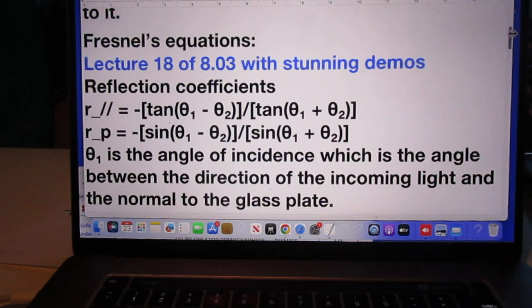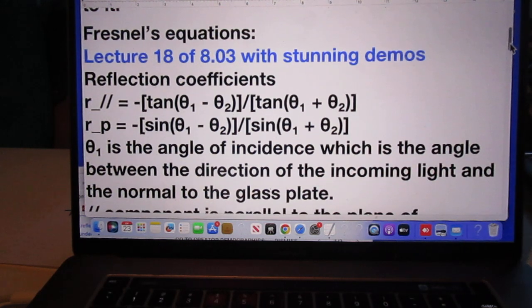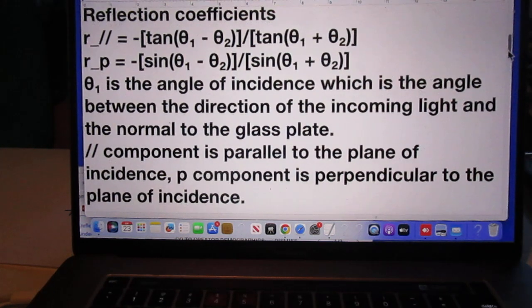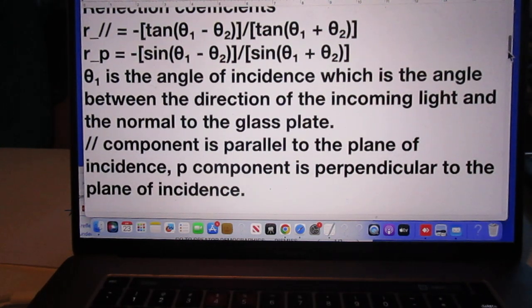Really watch it. However, you don't have to watch it to understand how I derived these two Fresnel equations. These two Fresnel equations you can use in this problem as math. Theta 1 is the angle of incidence, which is the angle between the direction of the incoming light and the normal to the glass plate.